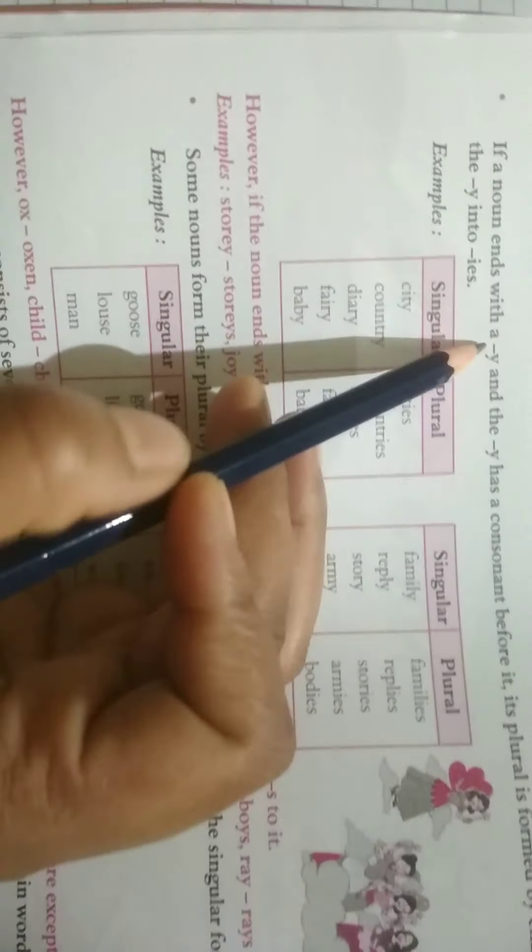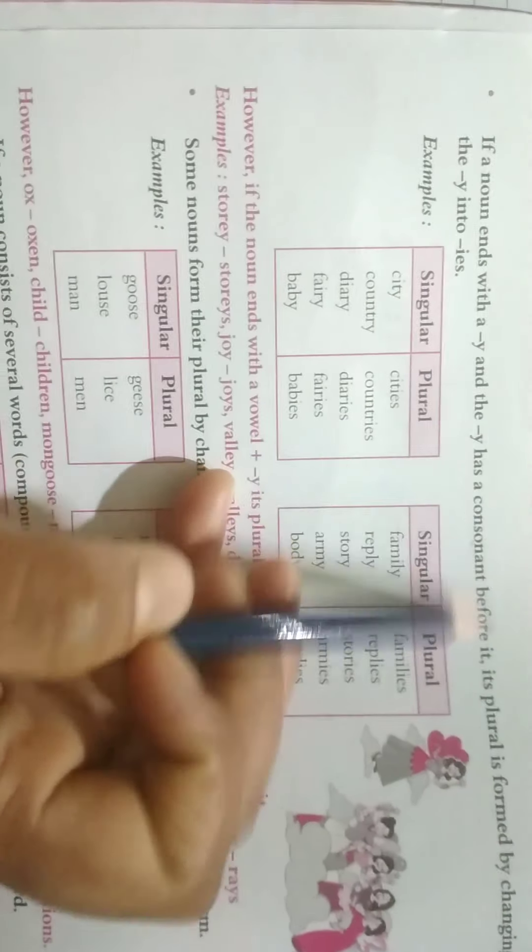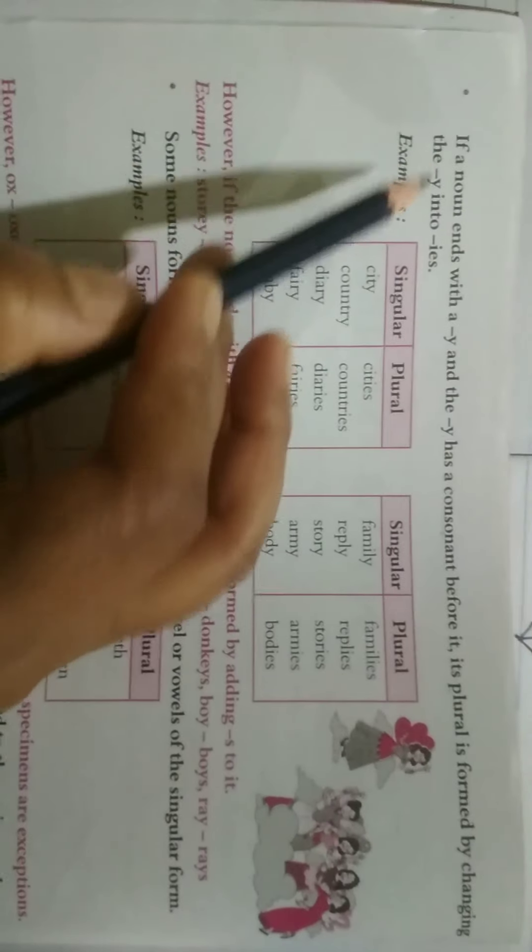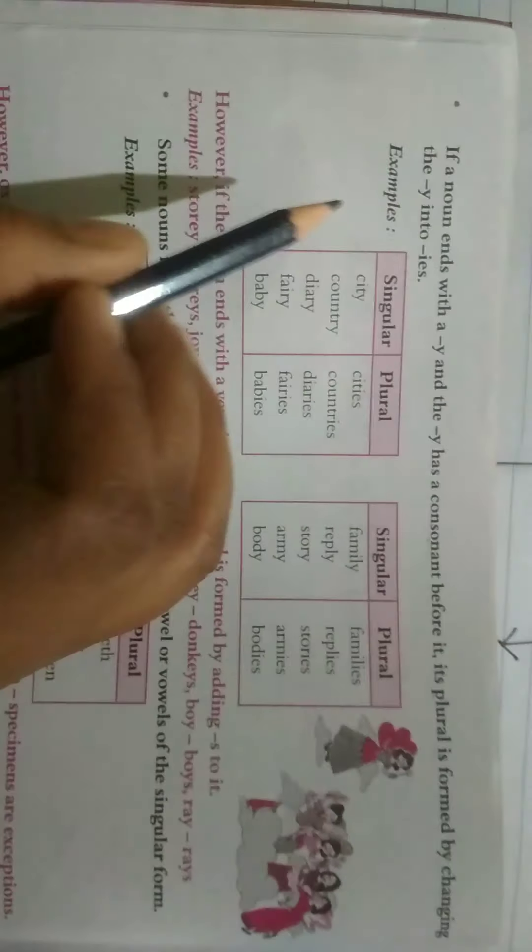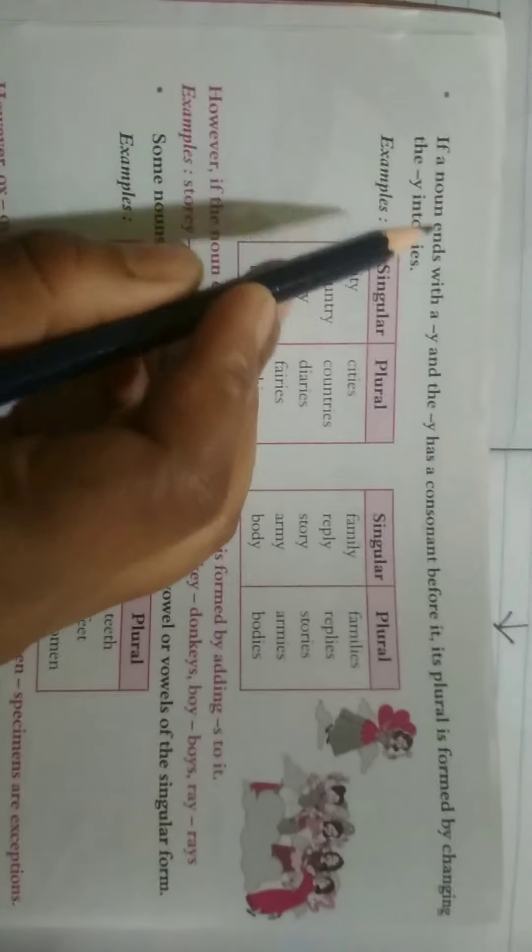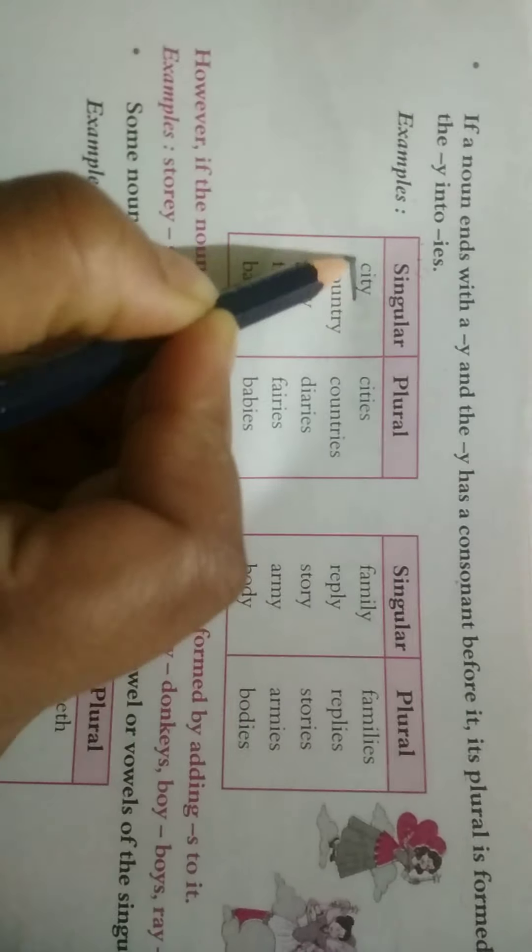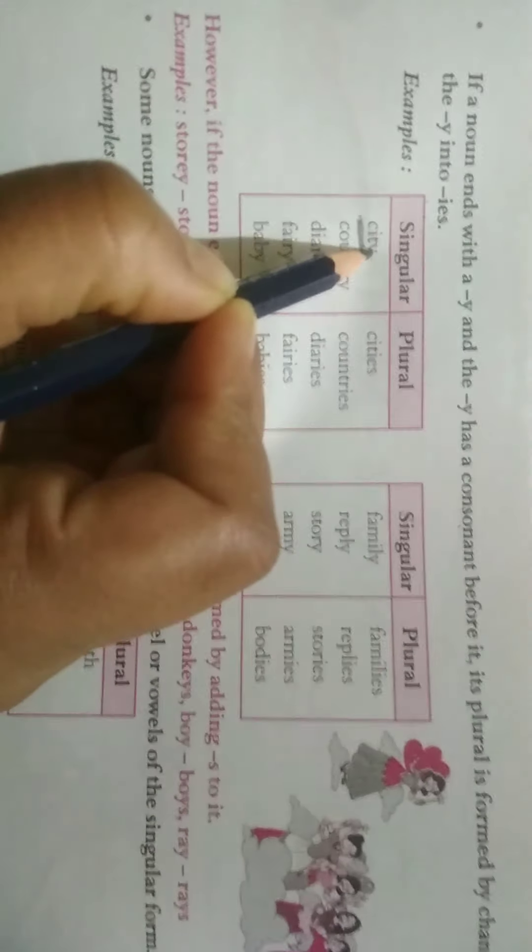So the next is, if a noun ends with a Y and the Y has a consonant before it, its plural form is formed by changing the Y into I-E-S. Now, it means that if a noun ends with a Y, now here, this noun, city, it's ending with the alphabet Y and we know that Y is a consonant.